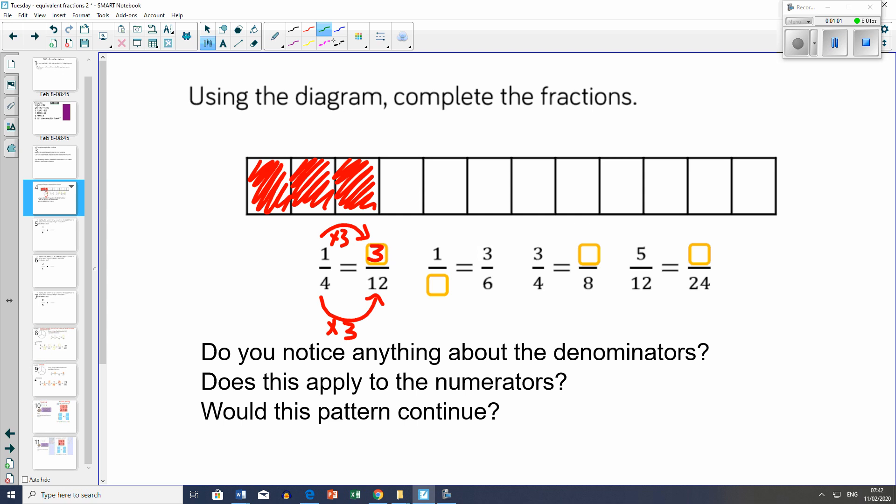The next one: 1 over something equals 3 over 6. Think, what did I do to 1 to get to 3? I multiplied by 3. What multiplied by 3 equals 6? Well, it's 2. So 1 half equals 3 sixths.